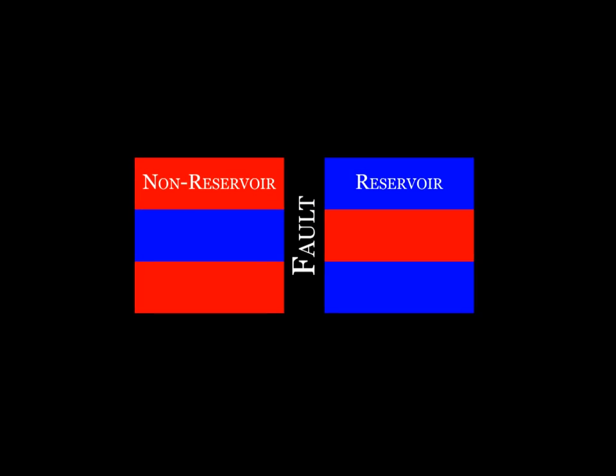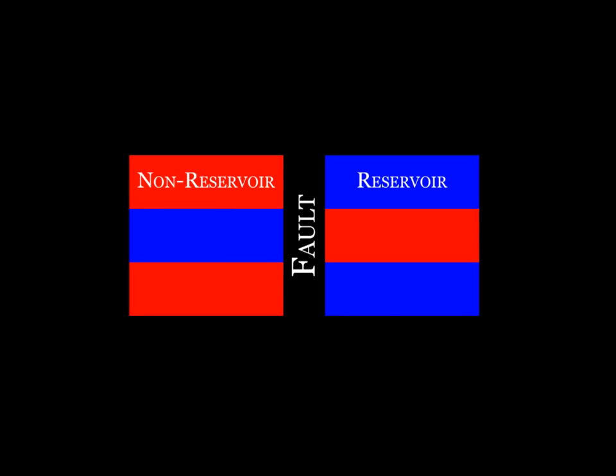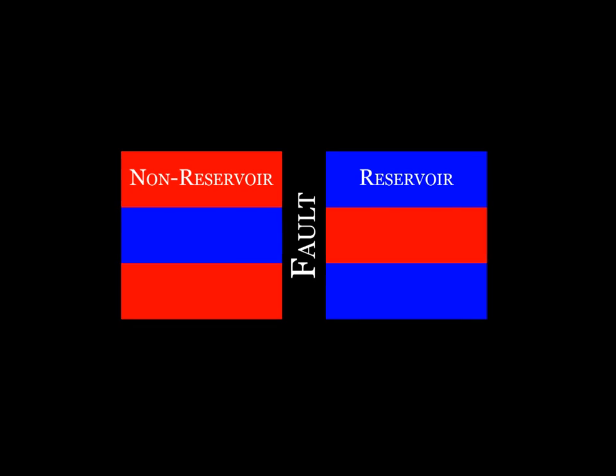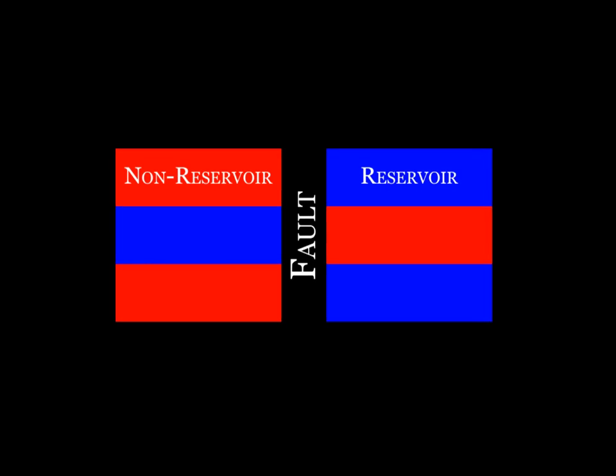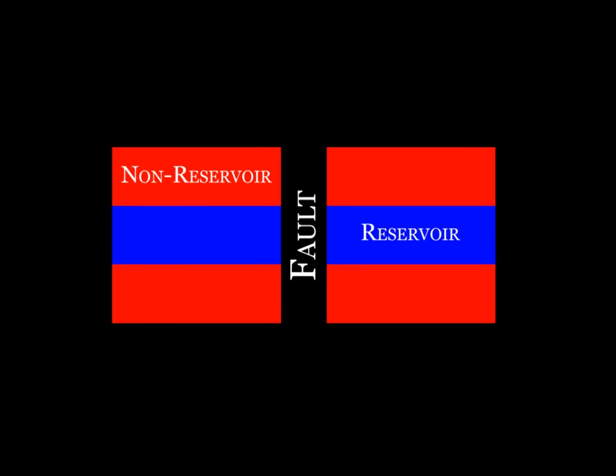Juxtaposition of a lithology on either side of the fault comes in two forms. A fault may juxtapose a reservoir against a non-reservoir — this type of juxtaposition can be found in the center of the picture where sandstone lies next to a layer of shale. A fault may also juxtapose a reservoir against a reservoir, as shown in the upper left-hand corner where two sandstone layers lie next to each other.